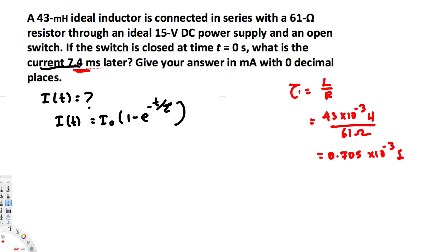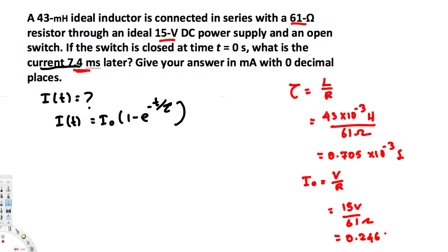Now we have our tau value, and we need to find I-naught. To find I-naught, we use the basic formula I equals V over R. The voltage is 15 volts and the resistance is 61 ohms, so I-naught equals 15 divided by 61, which gives 0.246 amperes.